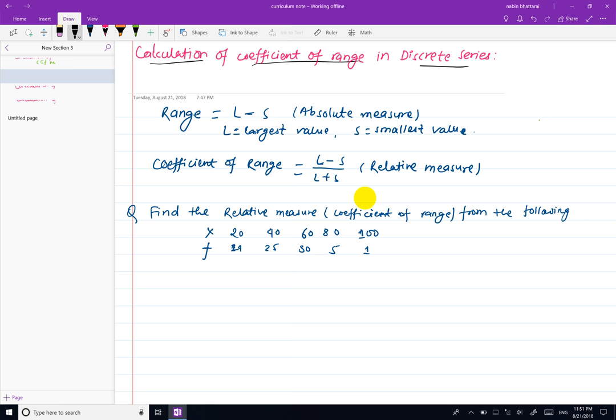In this video, we will calculate the coefficient of range for discrete series. Range is L minus S, the absolute measurement where L is the largest value and S is the smallest value. The coefficient of range equals L minus S divided by L plus S. This is the relative measurement.